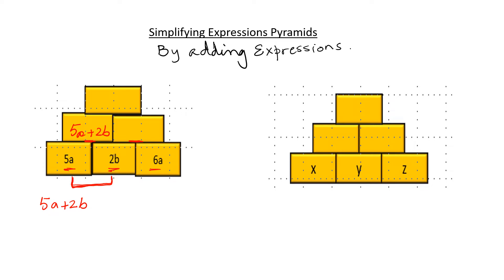In order to write the missing expression here, I need to add these two now. So it is 2b plus 6a. Because a and b are different, I cannot add b to a or a to b. So I will write 2b plus 6a here.